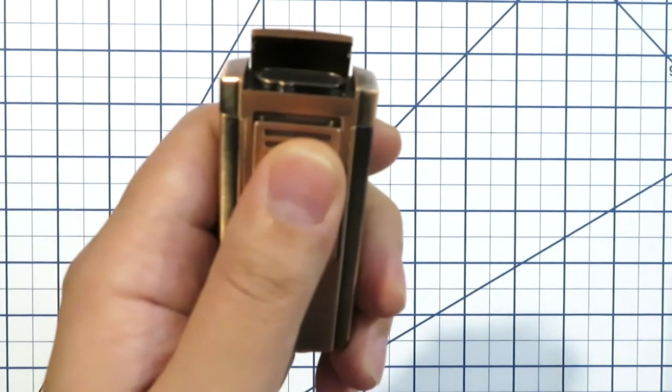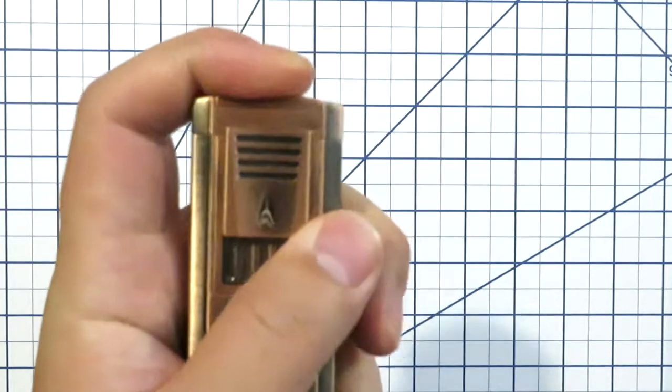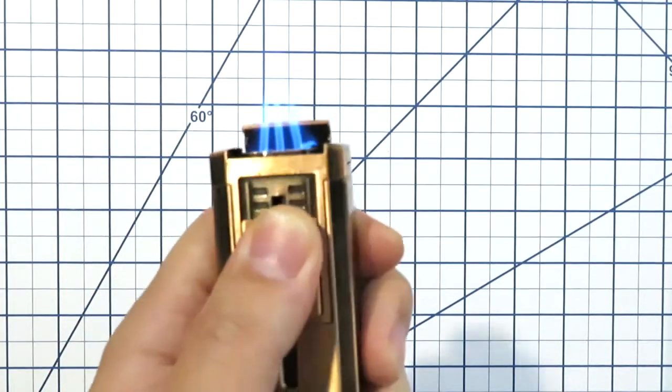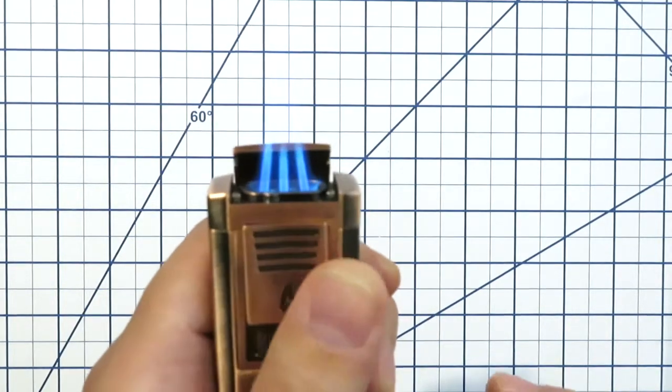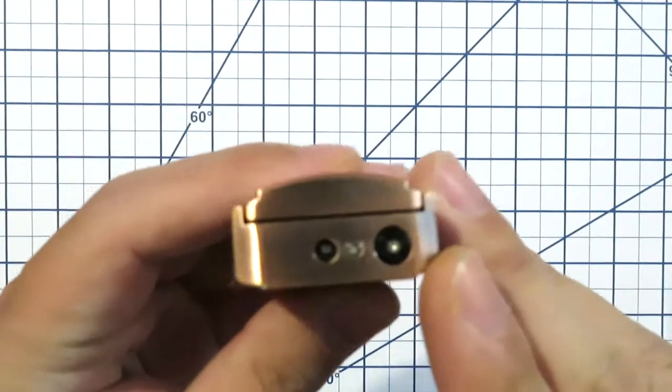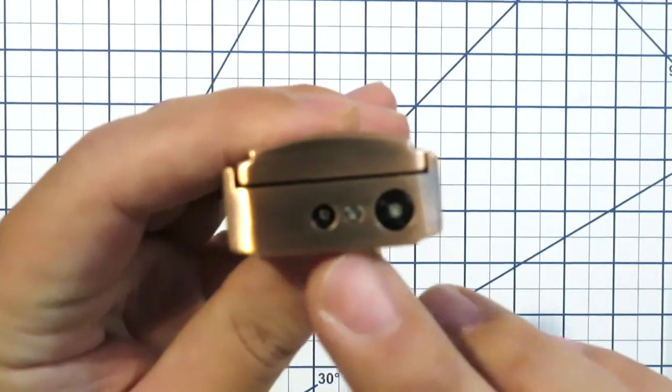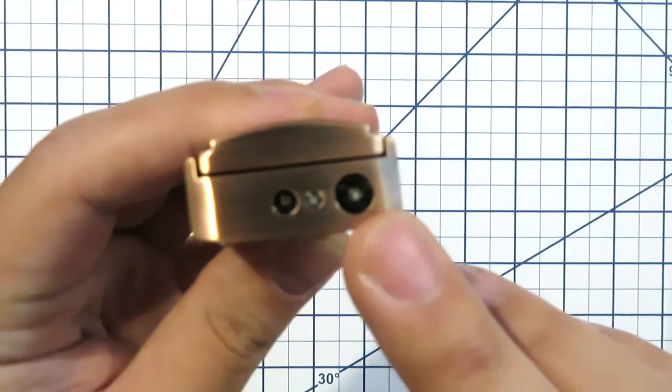Pull down activation that does flip the lift lid off there. Three nice blue flames that come out to the tip.